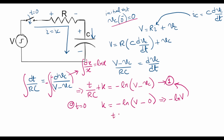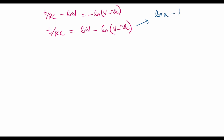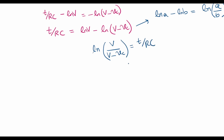Putting this value of K back in equation number one, we get T/RC minus ln(V) equals minus ln(V minus VC). Taking the natural log terms to one side, we can write T/RC equals ln(V) minus ln(V minus VC), and using the logarithm property that ln(A) minus ln(B) equals ln(A/B), this becomes ln(V / (V minus VC)) equals T/RC.